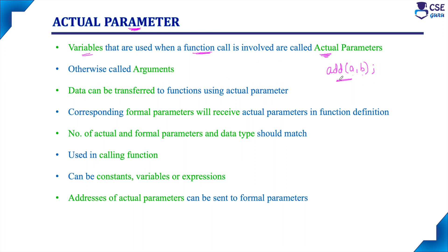Actual parameters are also called arguments — that is another name for them. Data can be transferred to functions using actual parameters. Here, 'a' and 'b' are the actual parameters, and they will hold the actual values that the user has entered.